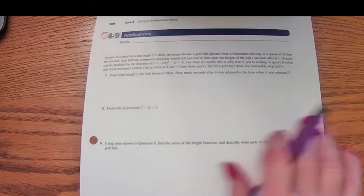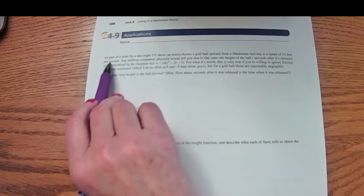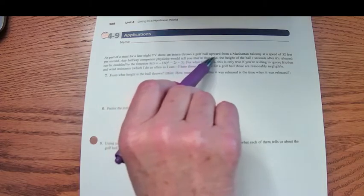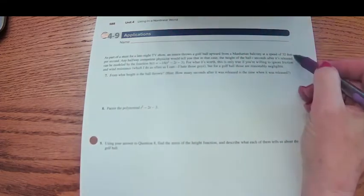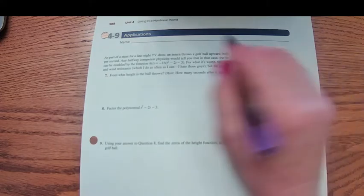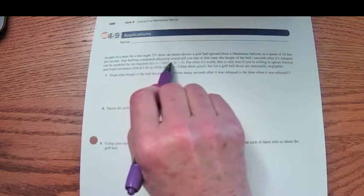Continuing with section 49, here's another quadratic application. As part of a stunt for a late-night TV show, an intern throws a golf ball upward from a Manhattan balcony at a speed of 32 feet per second.